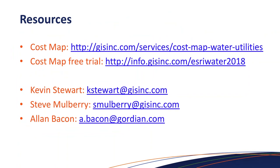For resources, we have a website with a COSTMAP page featuring a minute-and-a-half demonstration video, a white paper download, and a free trial registration form. The free trial will be available starting in March — we're talking about a 30-day trial. It's $3,600 per user per year — about $300 a month — and it's all inclusive of access to COSTMAP and your license to RSMeans data. Feel free to shoot us emails. Kevin Stewart and Steve Mulberry from GIS Inc., and Alan Bacon from Gordian, are all available.